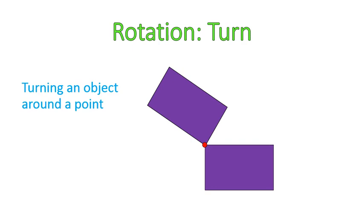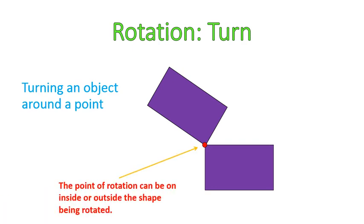That point that it's rotating around is called the point of rotation. And that point of rotation, in this case, it's on a vertex of this rectangle. But that point could be outside of the shape or inside the shape.